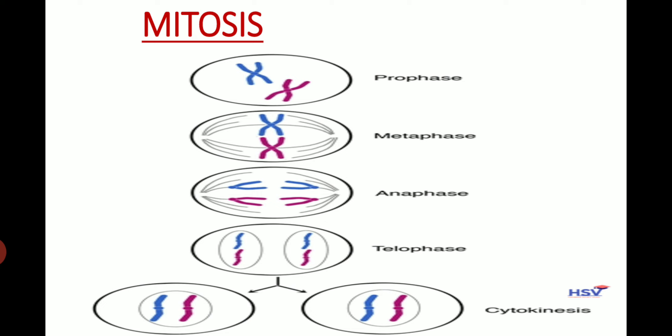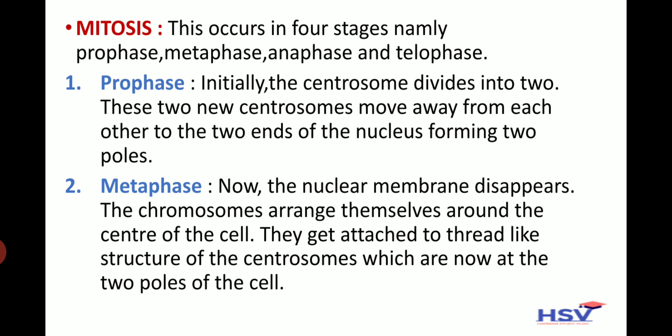During mitosis, each chromosome duplicates, so the daughter cells contain 46 chromosomes. This is all about mitosis.